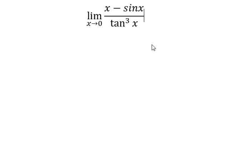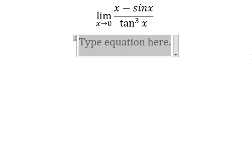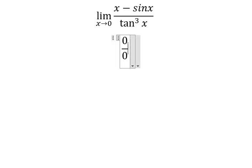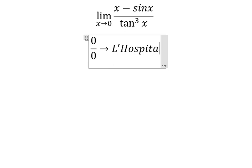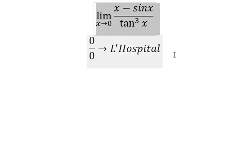I want to show you how to solve this problem. When x approaches zero, we put zero here, here, and here. We have zero over zero, so we can use L'Hospital's rule. That means we need to take derivatives.